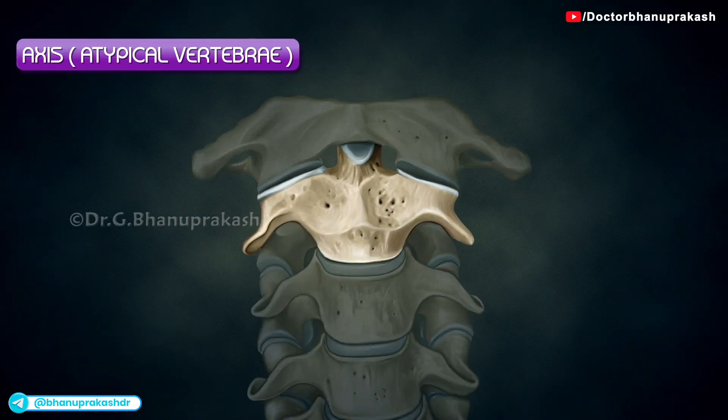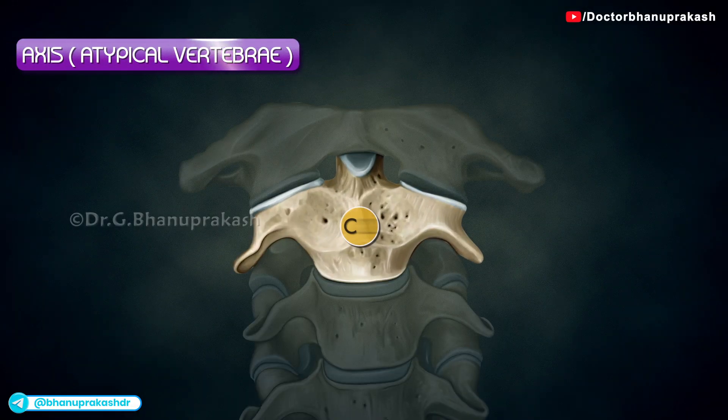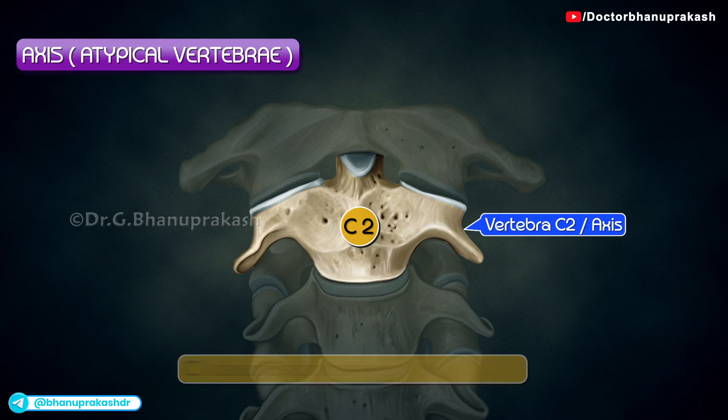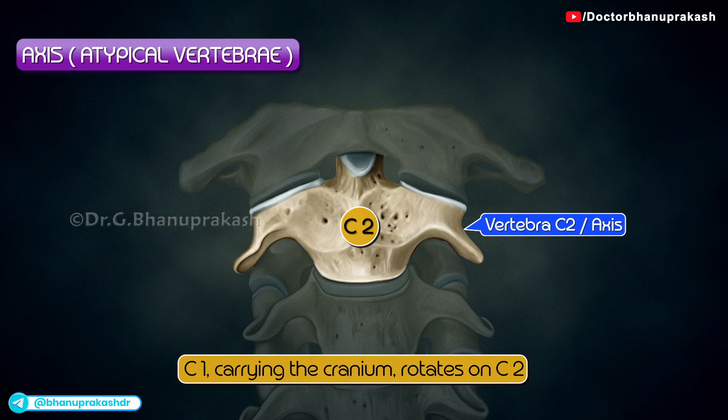Vertebra C2, also called the axis, is the strongest of the cervical vertebrae. C1, carrying the cranium, rotates on C2.